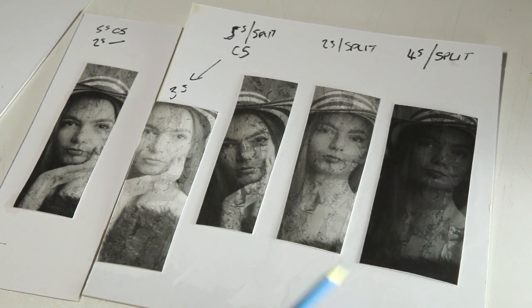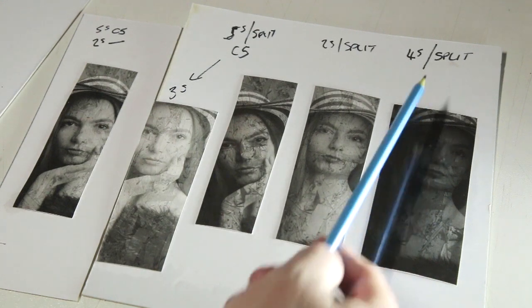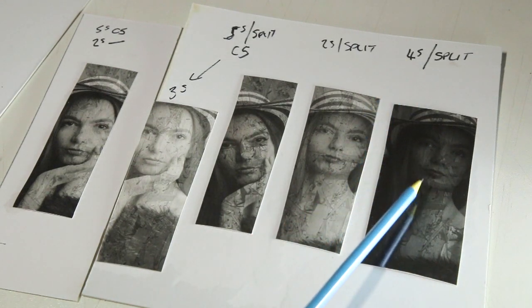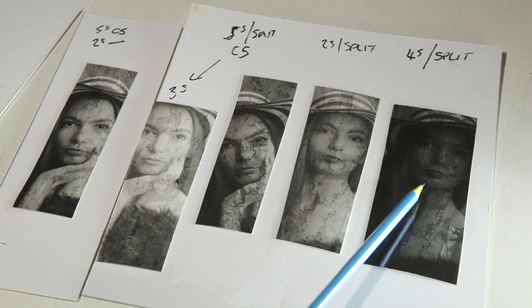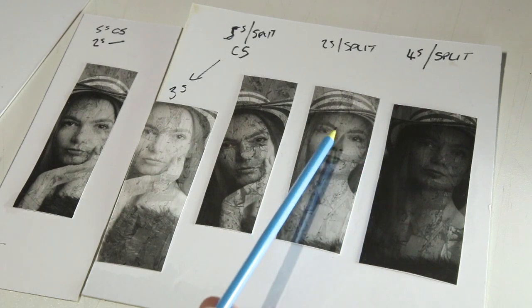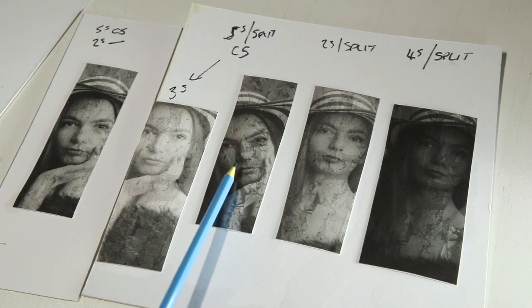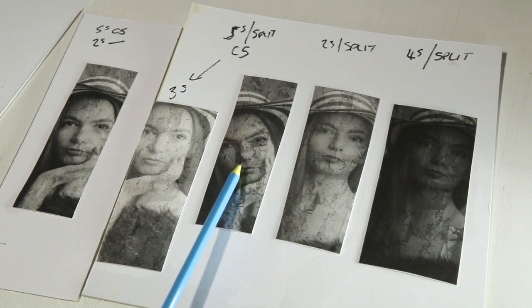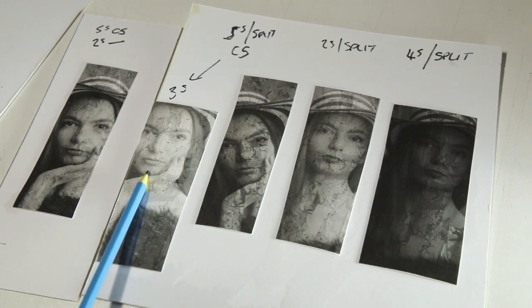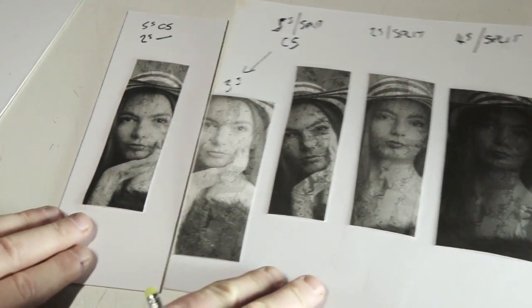Okay, so these are the test strips that I did. You can see I've got five test strips. This one was a four-second split, so four seconds with no filters at all was the portrait and then I did another four seconds with the texture negative. This one was two seconds, same way, two-second split. This particular one here, I did five seconds split using the contrast five filter. And then I did this one, which was a three-second split using the contrast five filter.